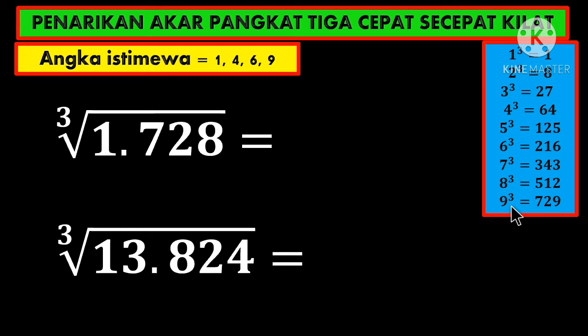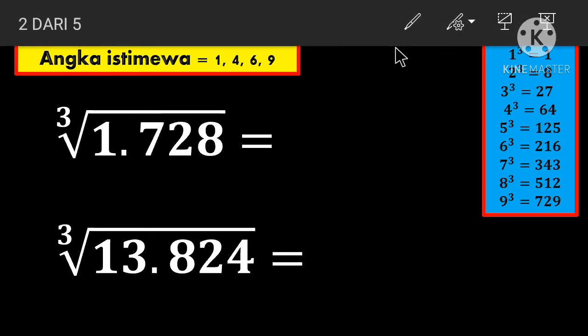Number 1: cube root of 1,728. The first step is to divide it into two parts, separated at the thousands place. Look at this last digit, it's 8. Is 8 a special number here? No. If not, we add to make 10. 8 plus what equals 10?